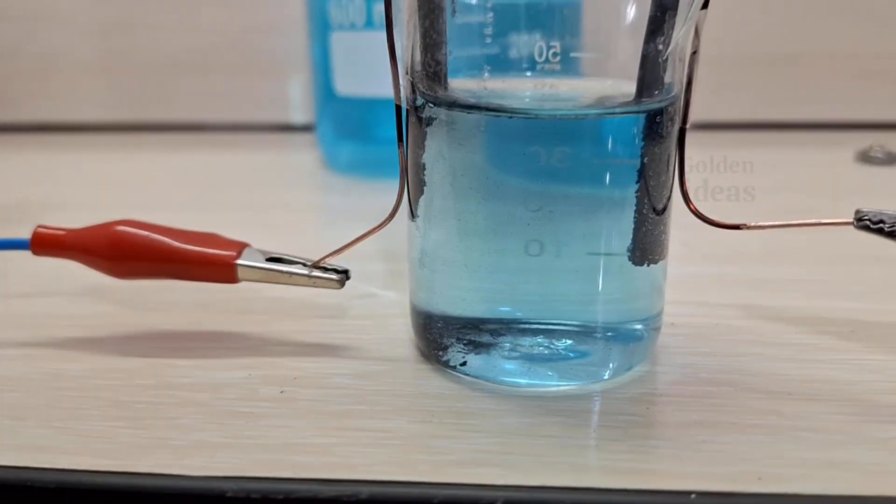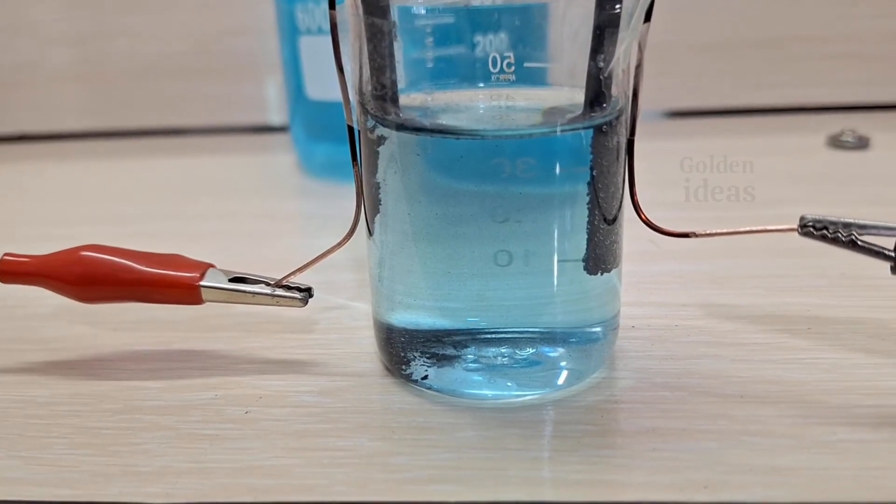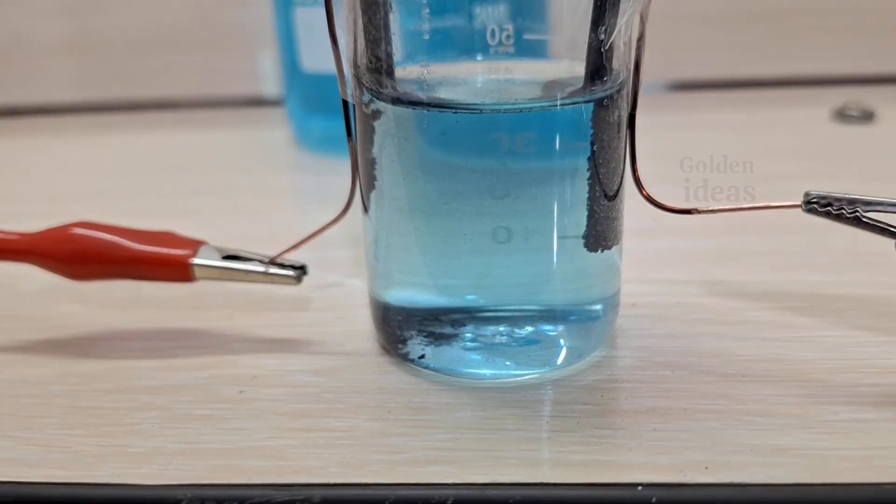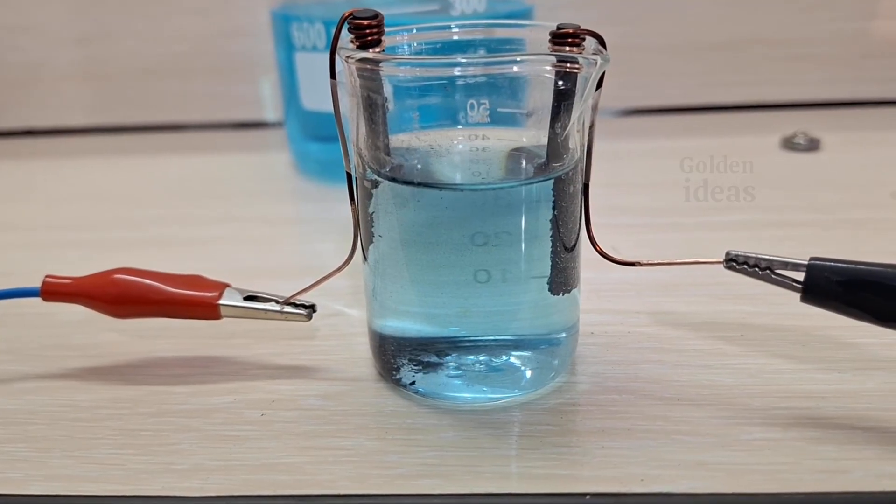As you can see, there are also some materials sticking to the negative side graphite rod, the anode. This very simple experiment might end up giving us some important insights.